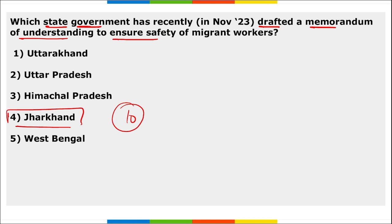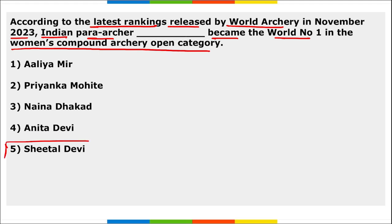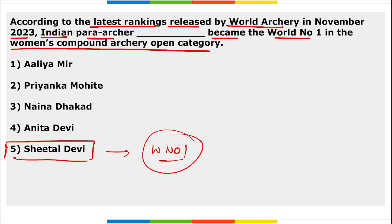Next: according to the latest rankings released by World Archery in November, which Indian Para Archer became the world number one in the Women's Compound Archery Open? It is Sheetal Devi. She is an Indian Para Archer who became the world number one in the Women's Compound Archery Open category. Sheetal Devi is related to the sport of archery.